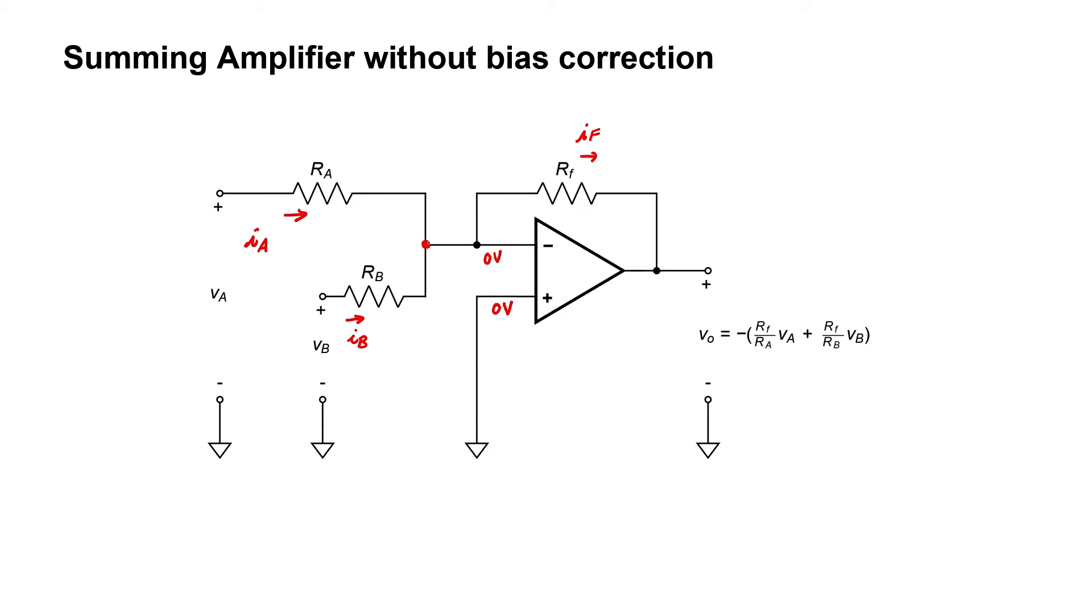Applying the Kirchhoff current law at the node, at the inverting terminal of the op amp, we know that those currents have to sum to zero. Or equivalently, I sub F has to equal I sub A plus I sub B.